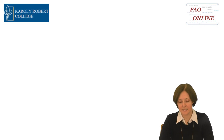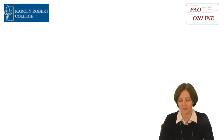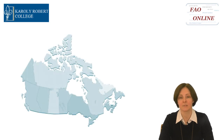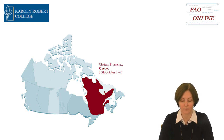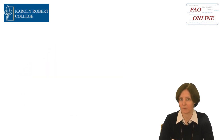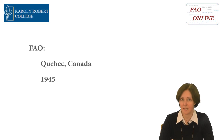The second and final step towards founding the organization was a meeting organized in Château Frontenac in Quebec, Canada, on the 16th of October 1945. This is where the formal foundation of the Food and Agriculture Organization of the United Nations took place. So Quebec is the birthplace of FAO and the 16th of October 1945 is the date of its creation.